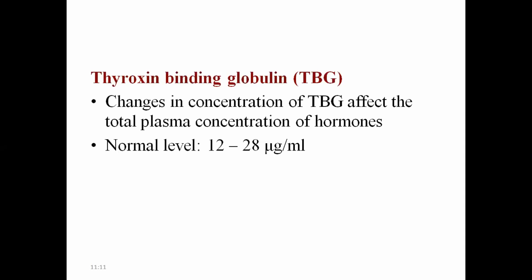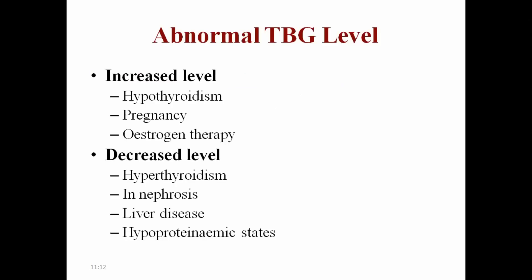Regarding thyroxine binding globulin (TBG) estimation: due to the development of direct estimation of free thyroid hormones (free T3 and T4), TBG estimation now has only historical importance. It is necessary only when measuring total plasma T3 and T4. Normal level of TBG is around 12 to 20 micrograms per ml. Increased TBG is generally seen in pregnancy and estrogen therapy; decreased TBG is seen in nephrotic syndrome, liver disease, and malnutrition.